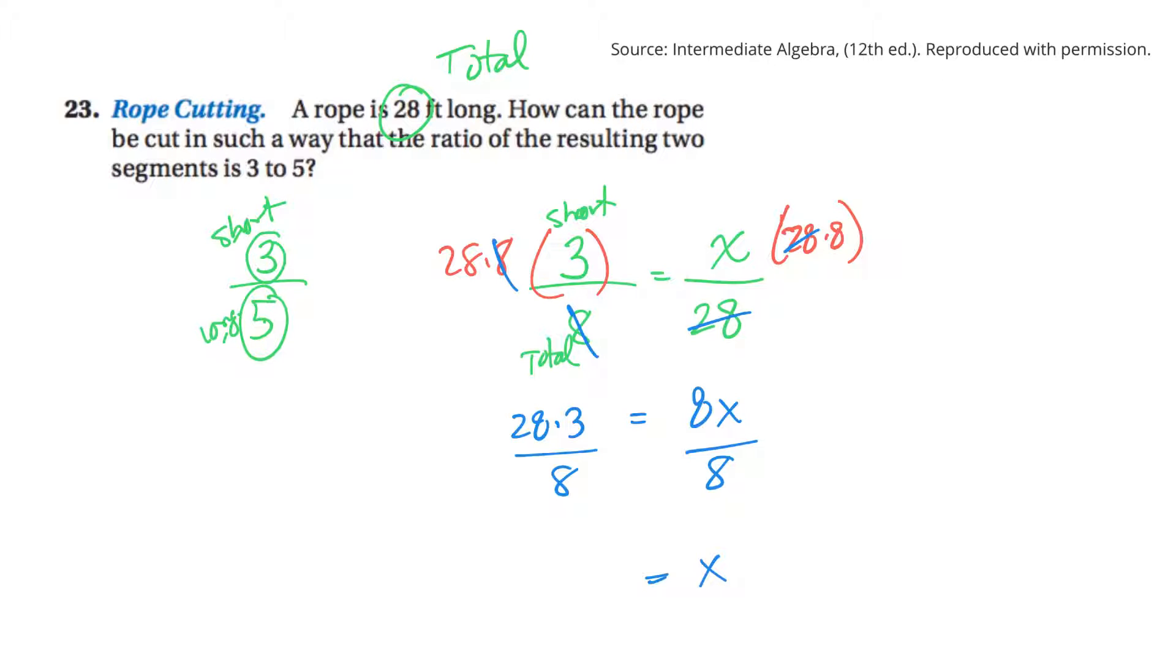So x is equal to, I could almost figure this one out. 4 will go into that 7 times, 3 divided by 2. So it would be 21 over 2, or x would be 10.5. So the shorter length would be 10.5. And then the longer one will be 28 minus 10.5, or 16.5, I think. So that would be the length of the two ropes.